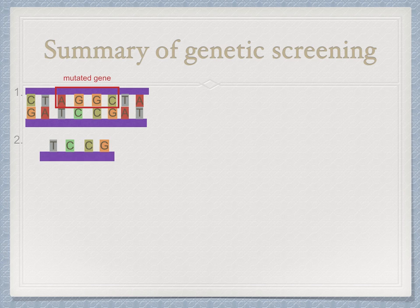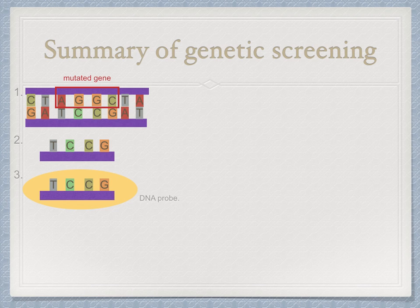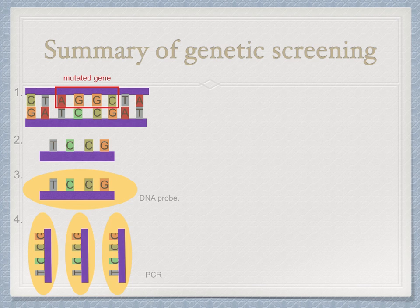A fragment of DNA that has complementary bases to the mutated portion of the DNA is produced. The fragments are labeled radioactively to form a DNA probe. Then multiple copies of the radioactively labeled DNA probes are made using the PCR technique — polymerase chain reaction.